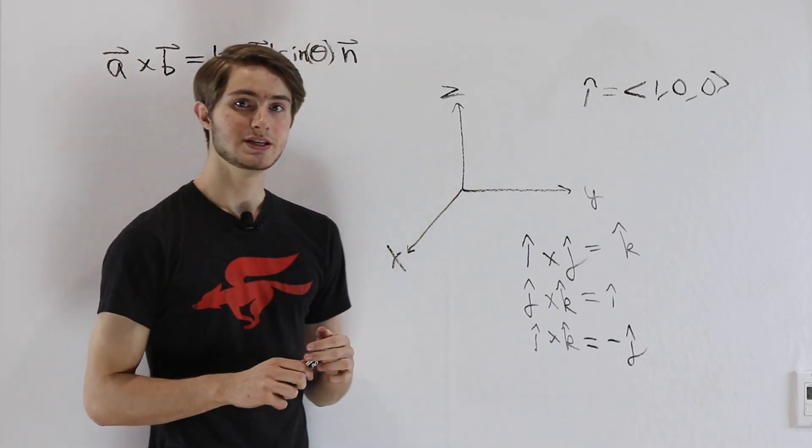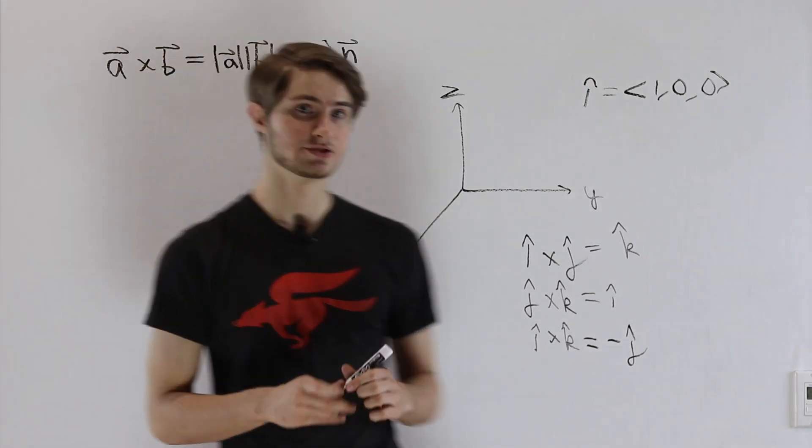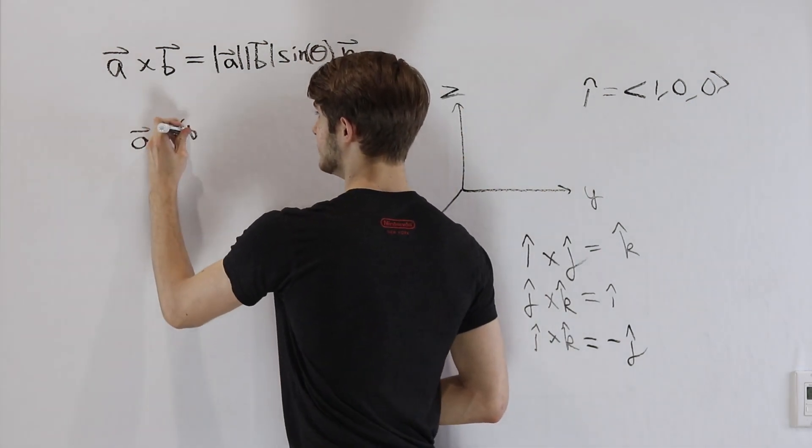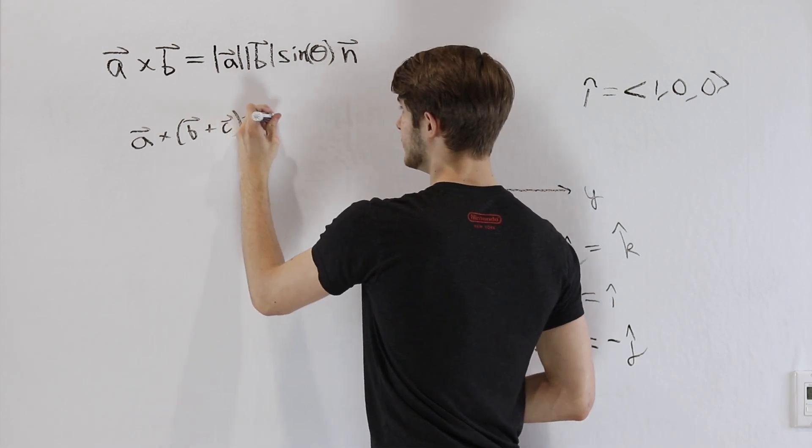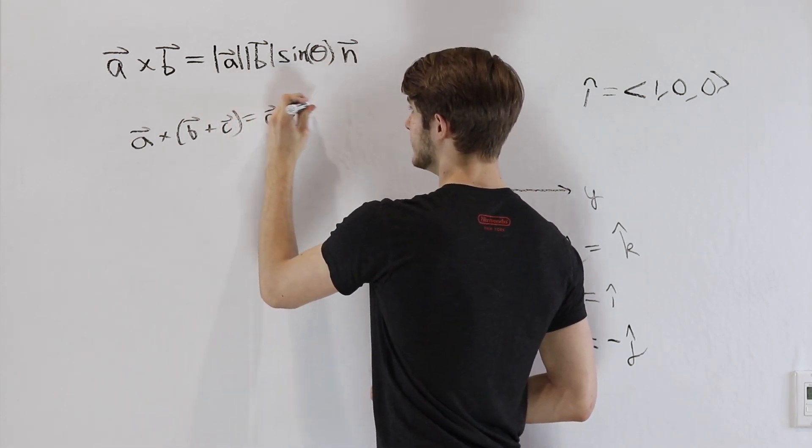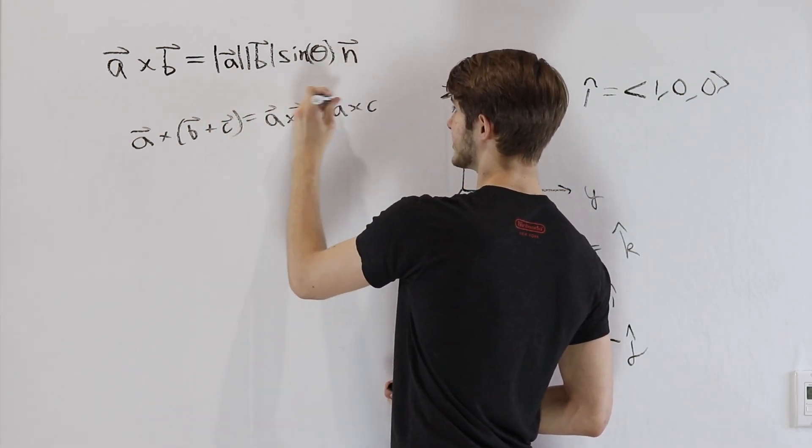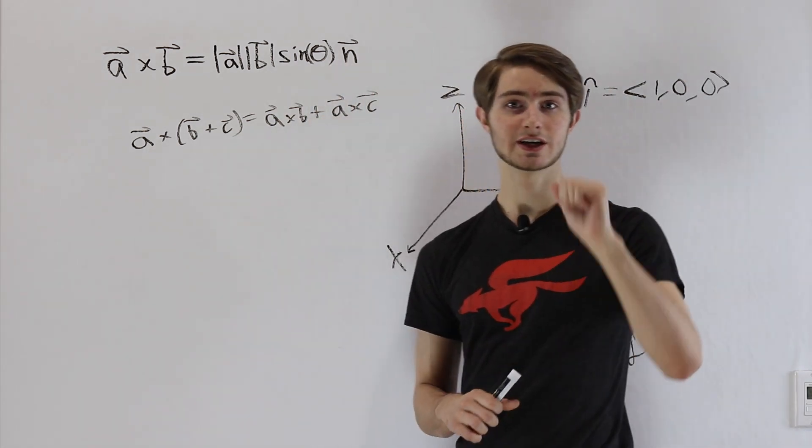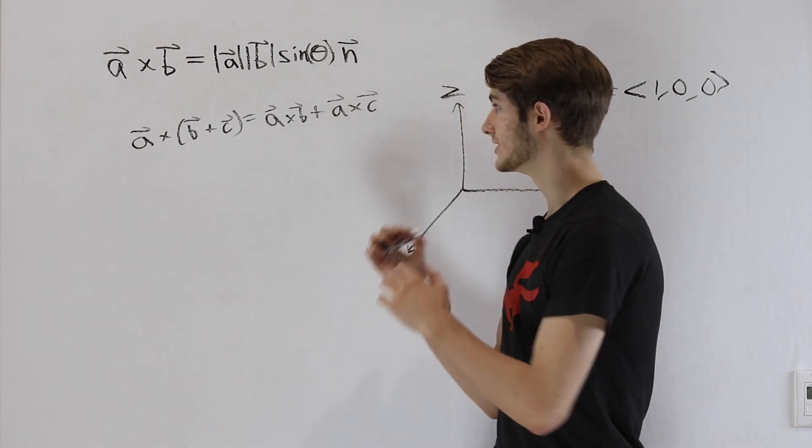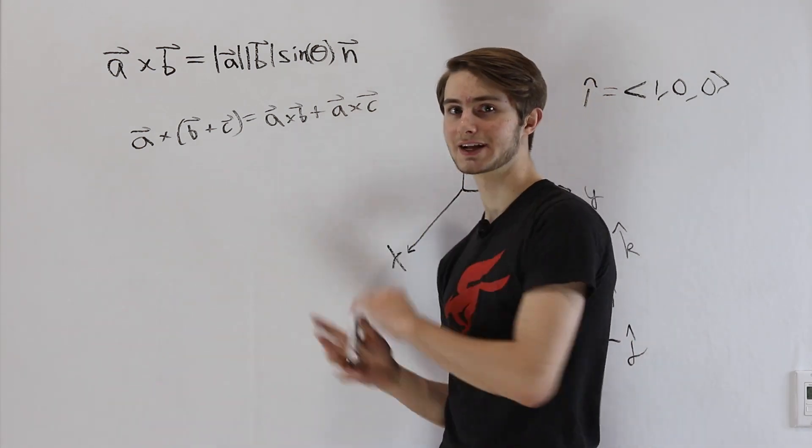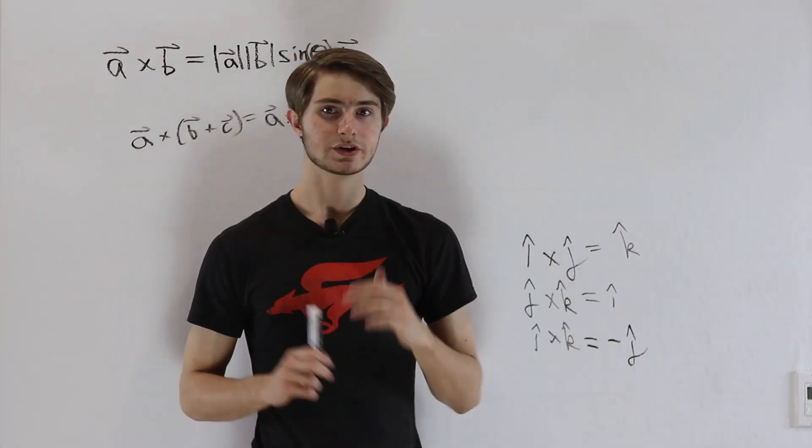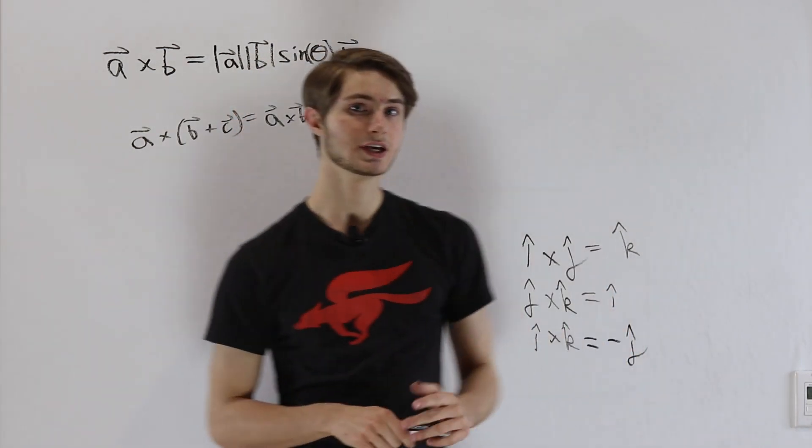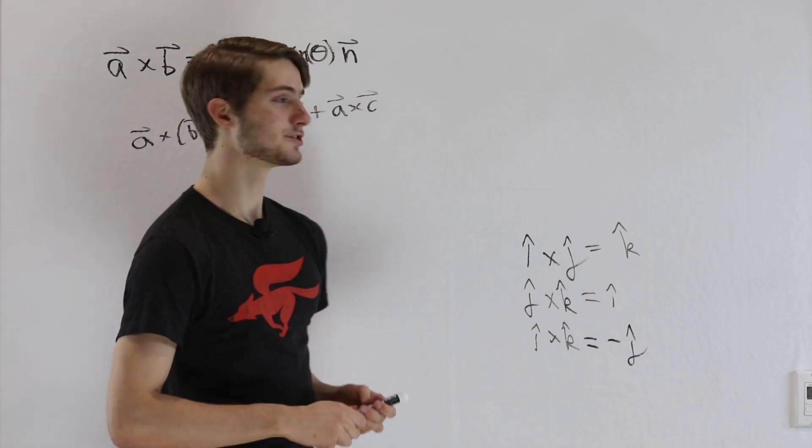The final identity we'll need is that the cross product is distributive. Which means a cross (b plus c) is going to equal a cross b plus a cross c. And I'm not going to prove this in this video, but you can check the link in the description for a proof or just an intuition of why exactly this works. So now that we have these formulas and this identity ready, we can start thinking about a general formula for the cross product of vectors.